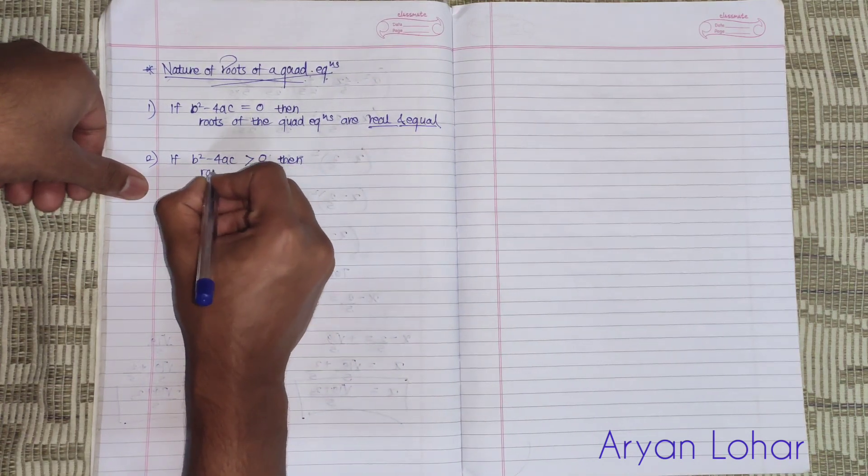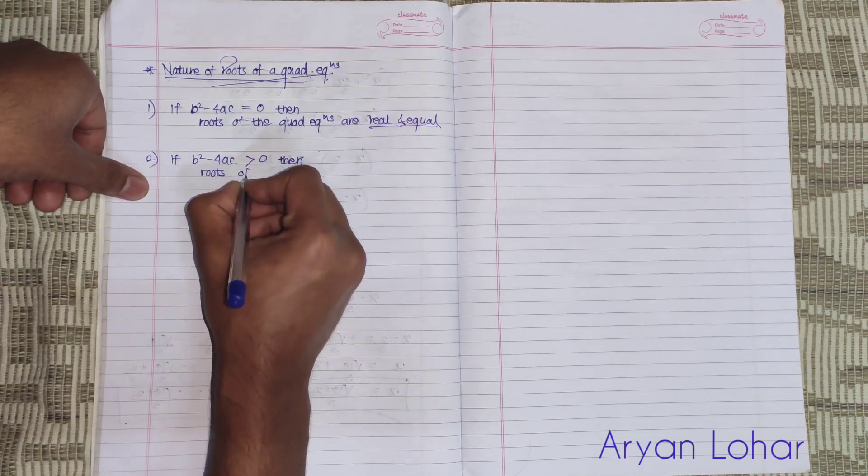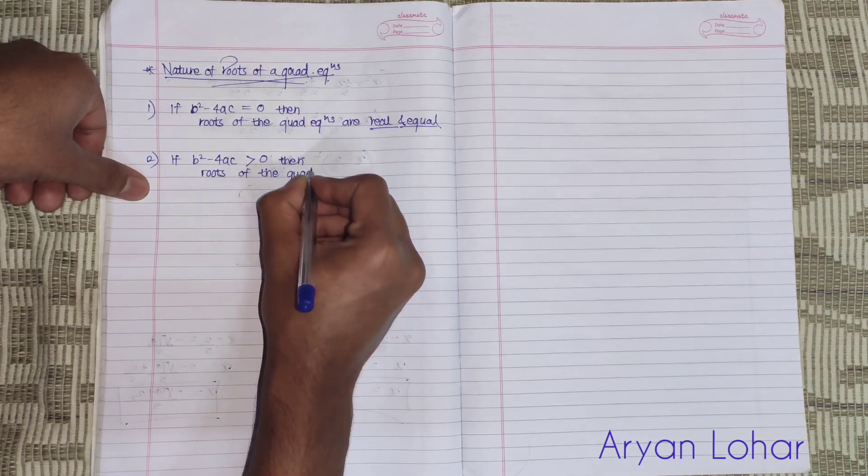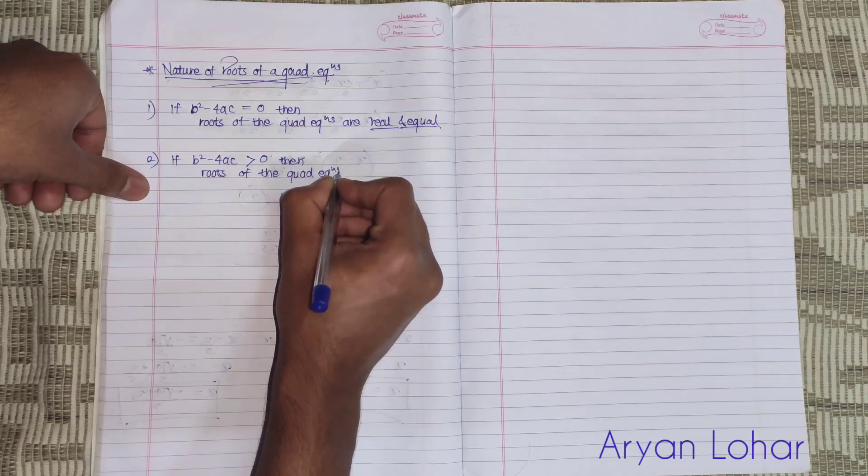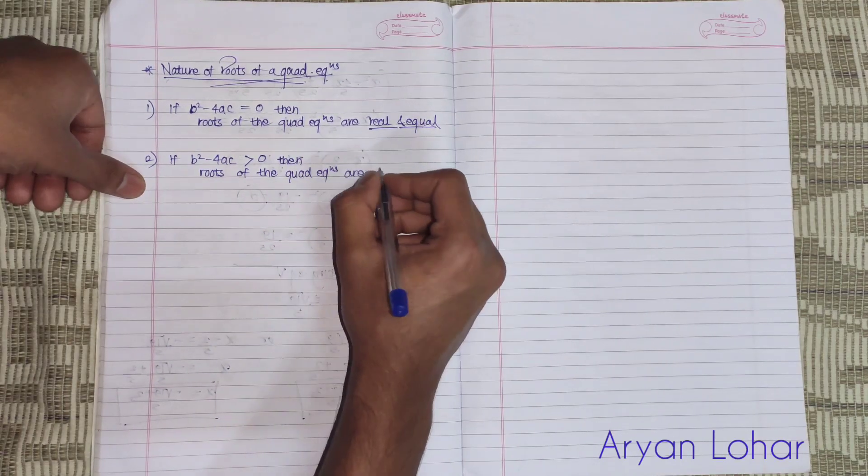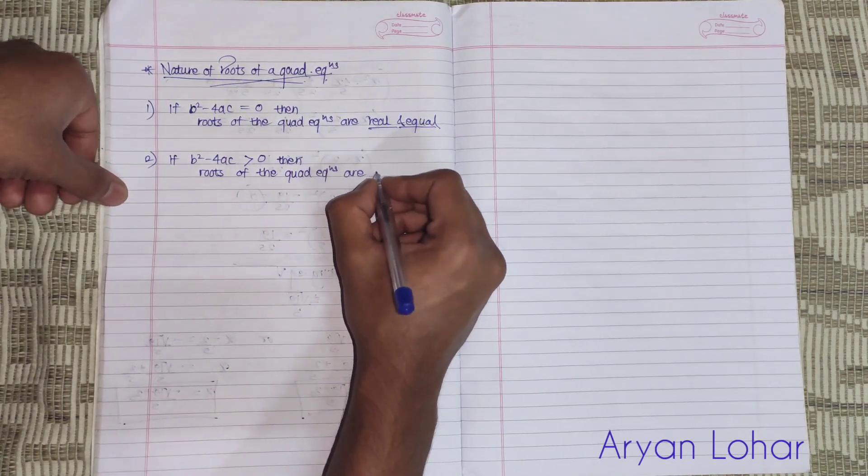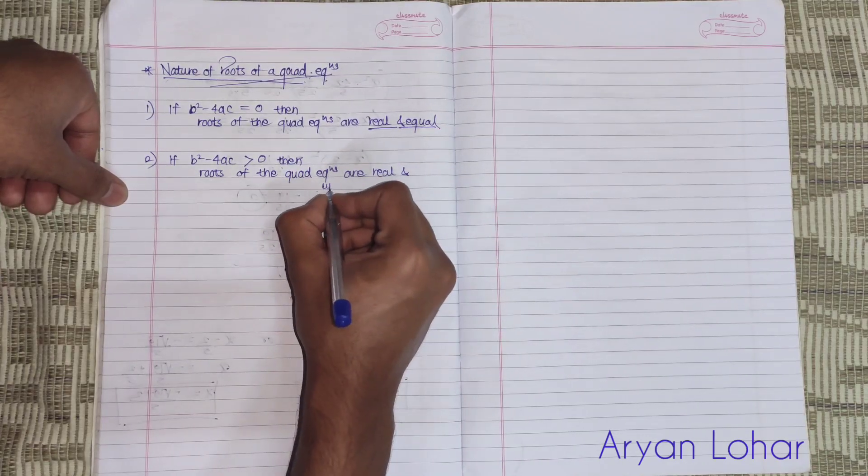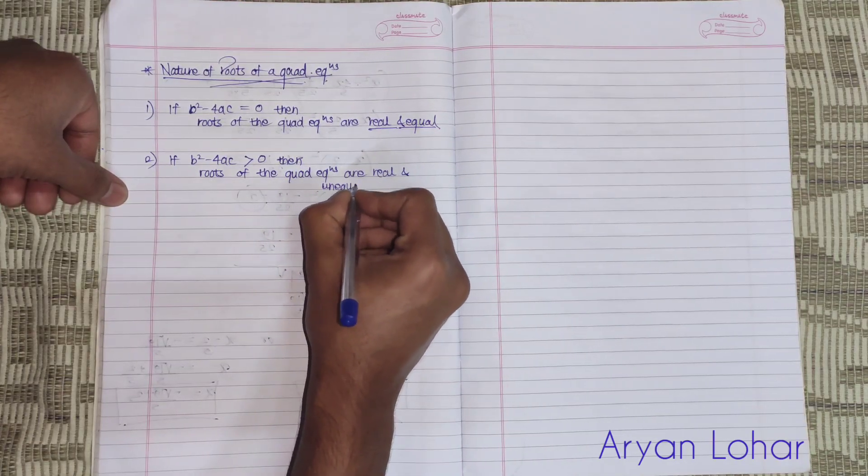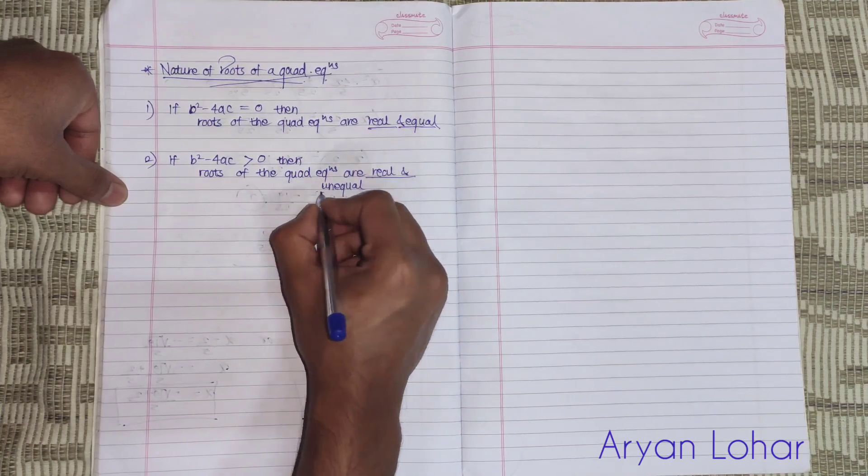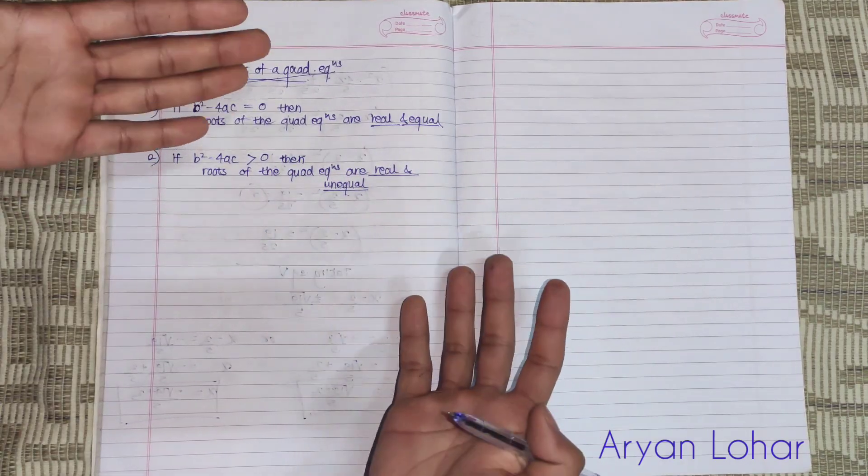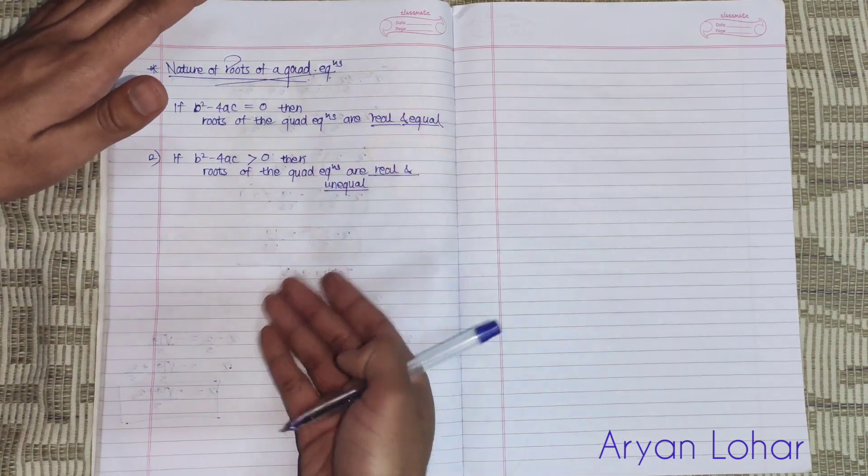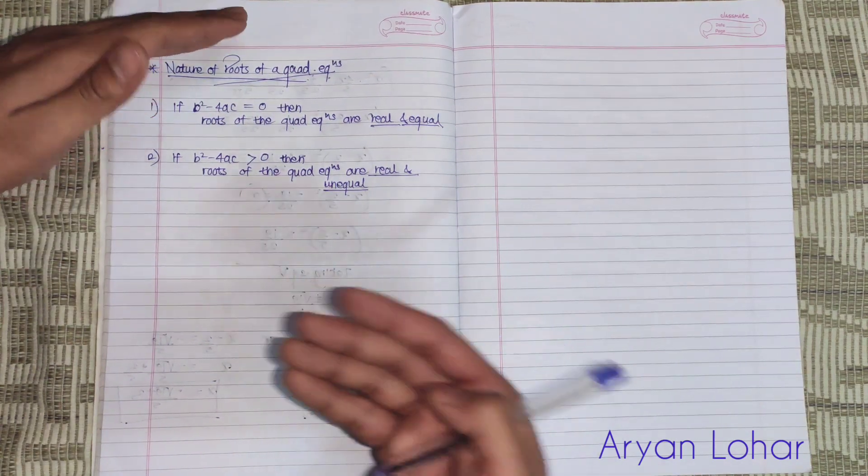...then roots of the quadratic equation are real and unequal. Means they are real, they are positive, but they are not equal. Means one is 2 and another is 4 - they are not equal.